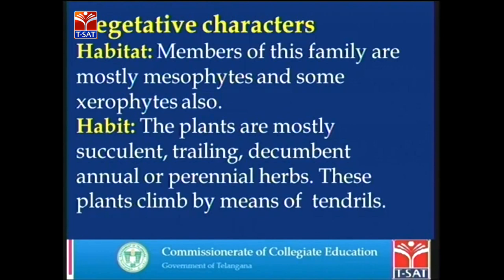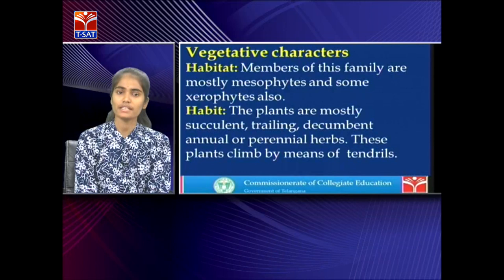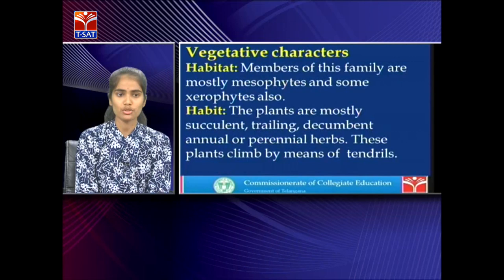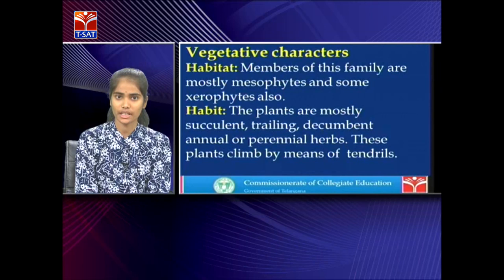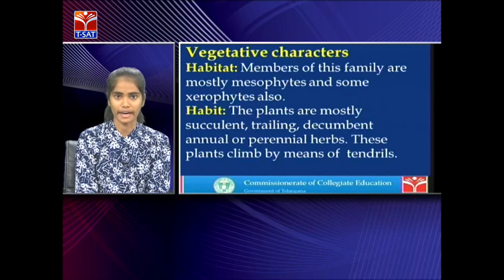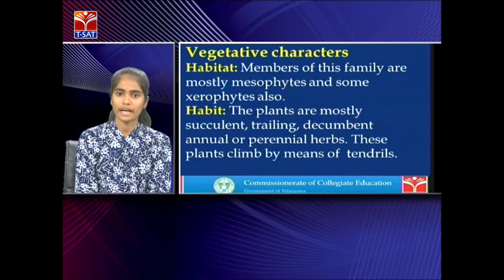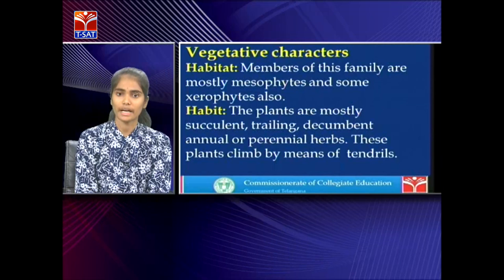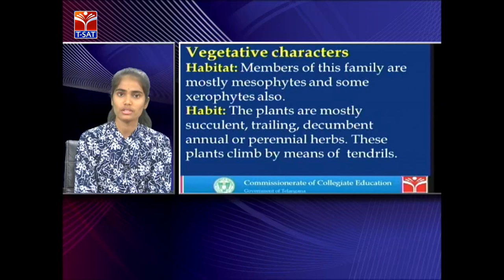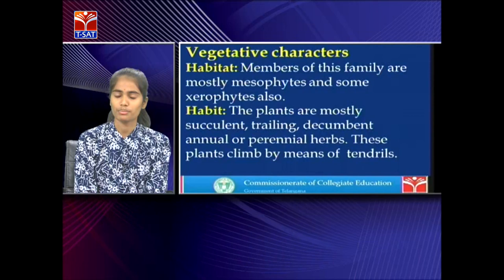The vegetative characters: this family are mostly mesophytes, meaning they grow in areas with an average supply of water, and very few xerophytes, which can grow in water-scarce areas. In habit, these plants are succulent with juicy leaves or water-storing tissues, trailing — growing on the ground with weak, thin, long shoots — and decumbent annual, meaning they grow on the ground fixed by roots. These plants climb with the help of simple or branched tendrils.